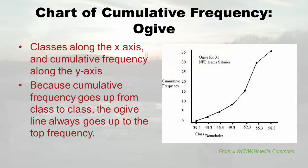Those who use cumulative frequency like to plot it in a chart called an ogive. In healthcare I've honestly never seen one — this example uses NFL team salaries, so it's more common in economics. The classes are on the x-axis, cumulative frequency on the y-axis. You just graph it, and it will always go upward — unless a class has zero frequency — eventually hitting the total cumulative frequency at the end.